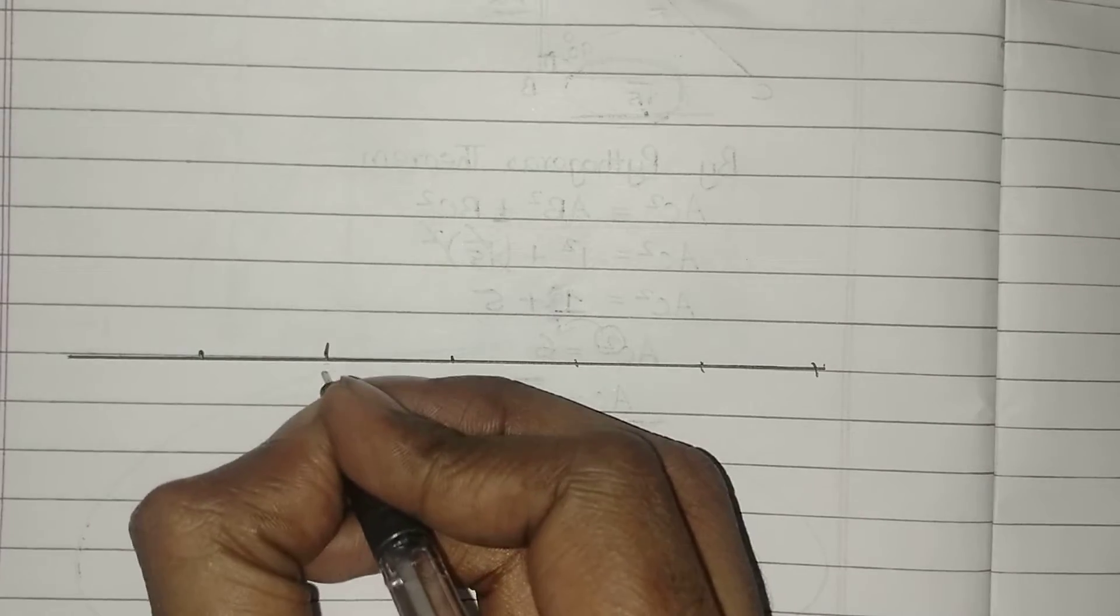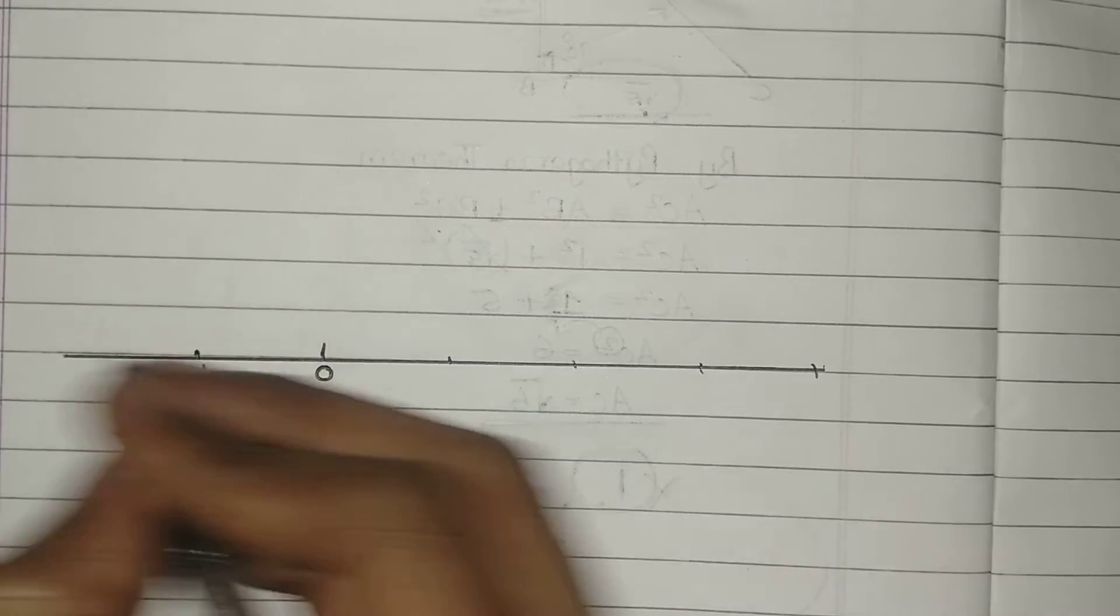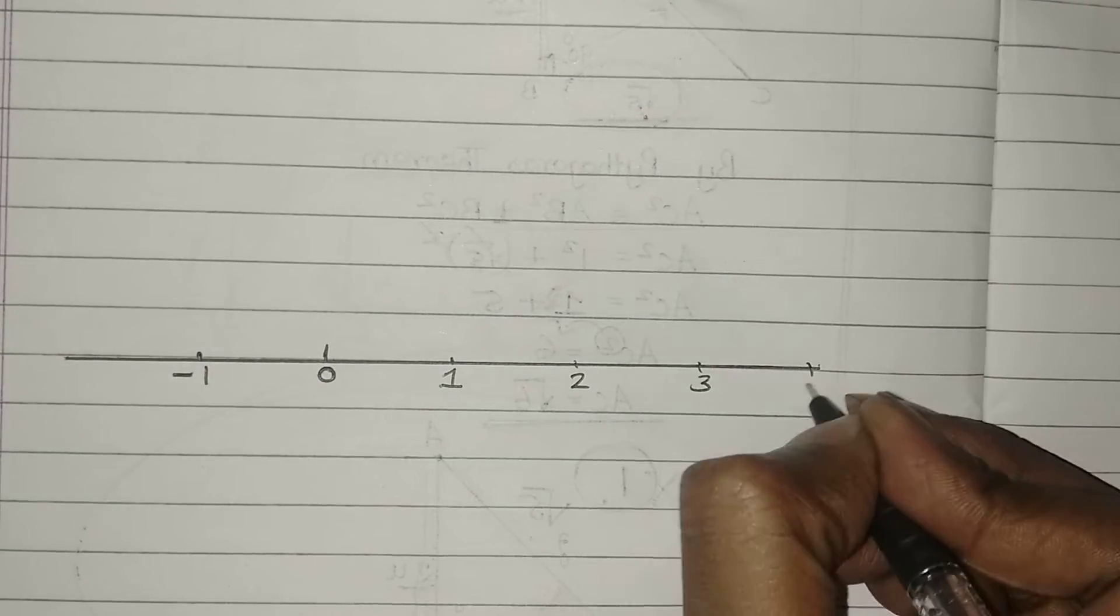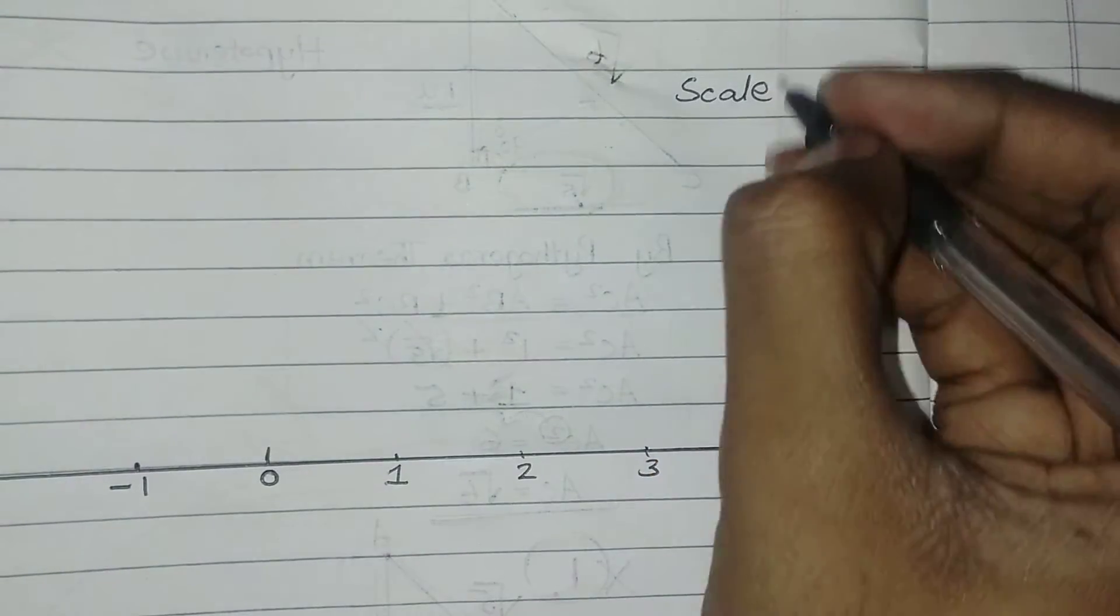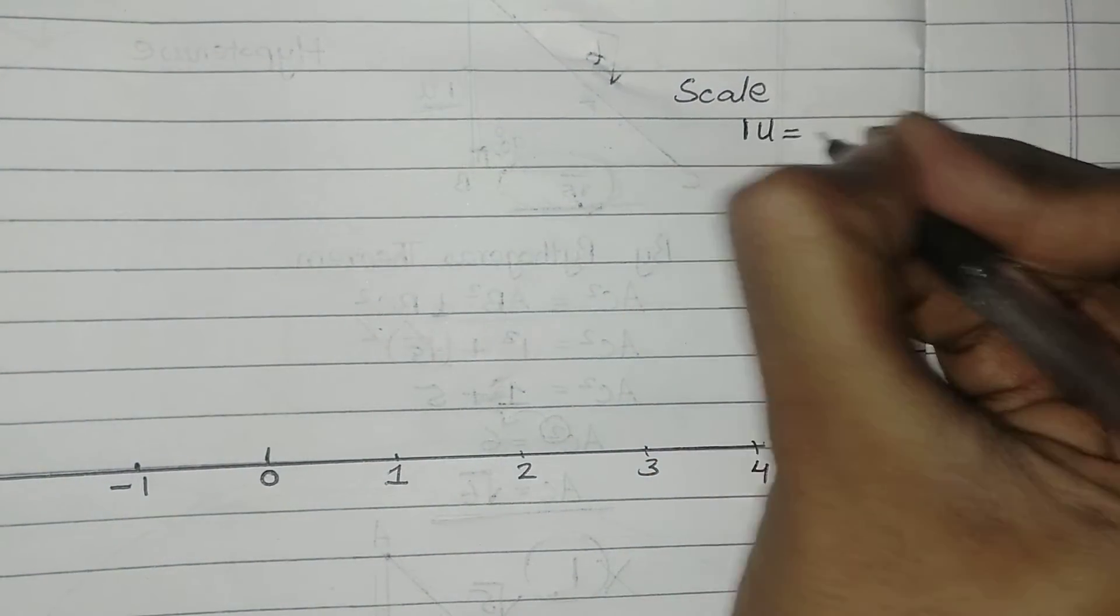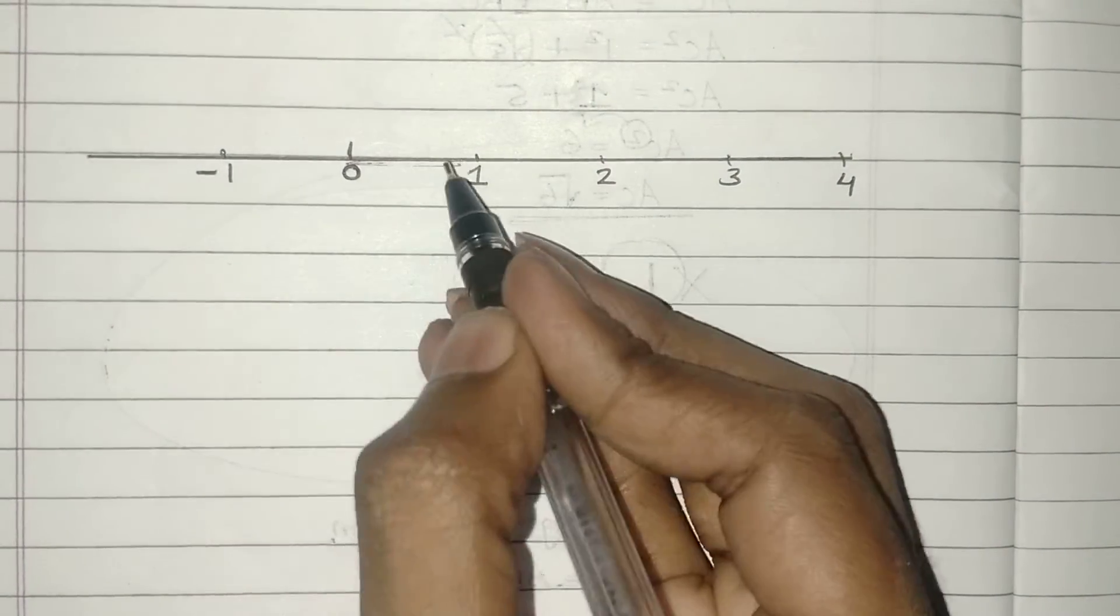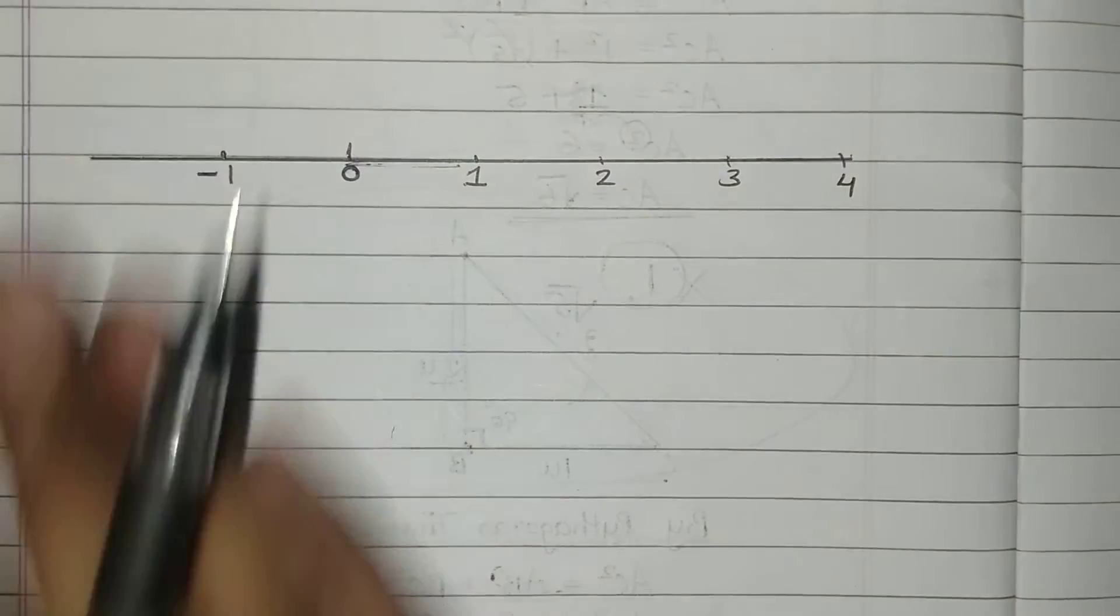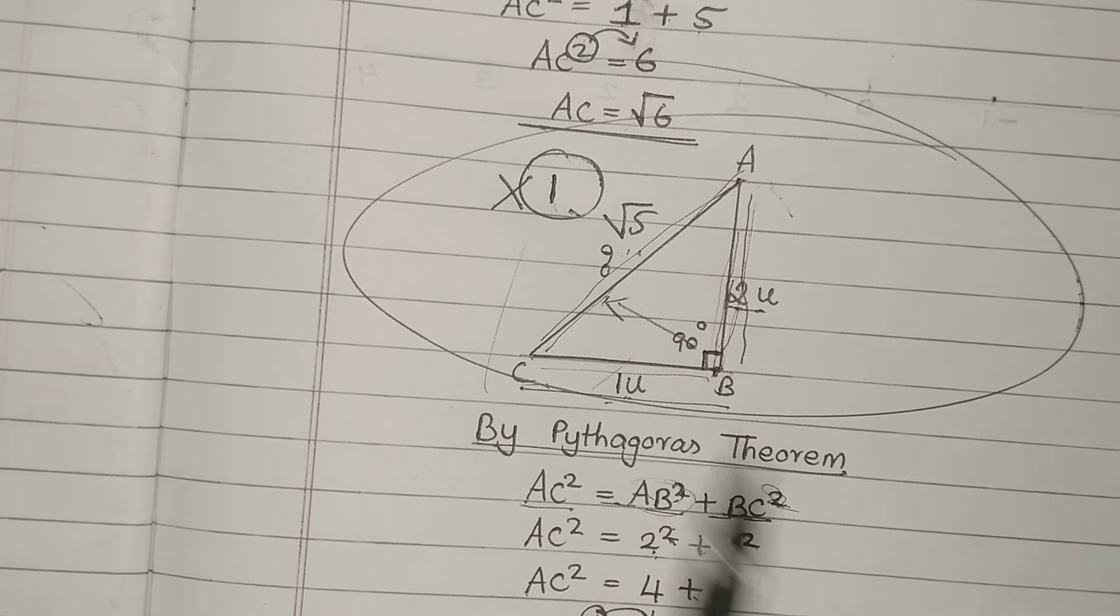So if this is my 0, this is my -1. No need to write negative but just for reference. And positive, let it be more. Please don't forget to write the scale: 1 unit = 2 cm. In this, 1 unit is how much? 1 unit is 2 cm. What is the first step? First step is we need to construct root 5 on a number line.